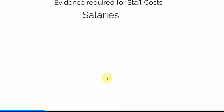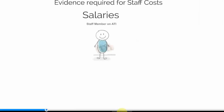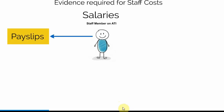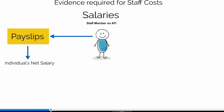Looking at the salaries evidence required, we have the staff member working on ATI. The evidence will be different depending on the type of payroll system operating within the organisation. For some organisations who pay their staff directly, their pay slips provide sufficient evidence. On the pay slip we will see their gross salary and net salary. The net salary is the amount the staff member gets paid and therefore the amount we require to see as defrayal evidence.